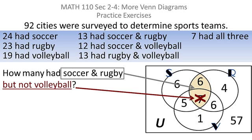But not volleyball. So I've got to knock out those seven that were also in the volleyball circle. So that leaves me with six cities that had soccer and rugby, but not volleyball.